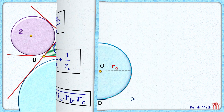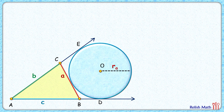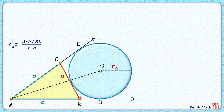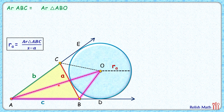First step: we'll prove that for any excircle, the radius is given by the formula — area of triangle divided by (s minus a), where s is the semi-perimeter. We have proven this in the previous video, but for the sake of continuity let's do it again. To prove it, we'll first join all three vertices A, B, C with the center O — so AO, BO, and CO. That's our construction. The area of triangle ABC is then the area of triangle ABO (the pink triangle) plus the area of the blue triangle, minus the area of the green triangle, which gives the area of the yellow triangle.